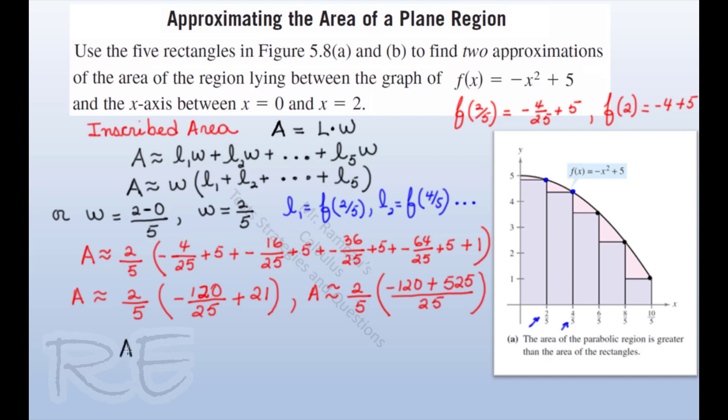So A is equal to two-fifths times 495/25. When we divide by 5, we get A is approximately 2 times 81 over 25.